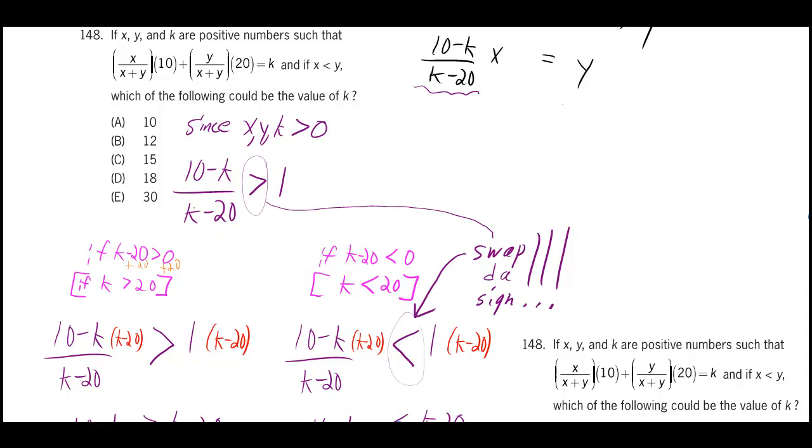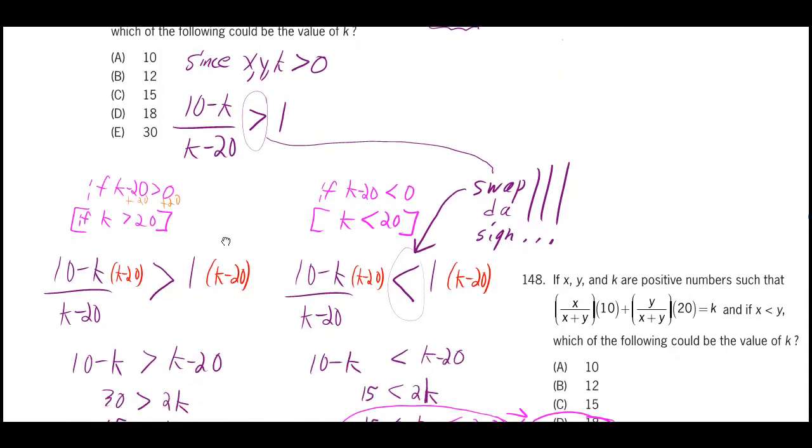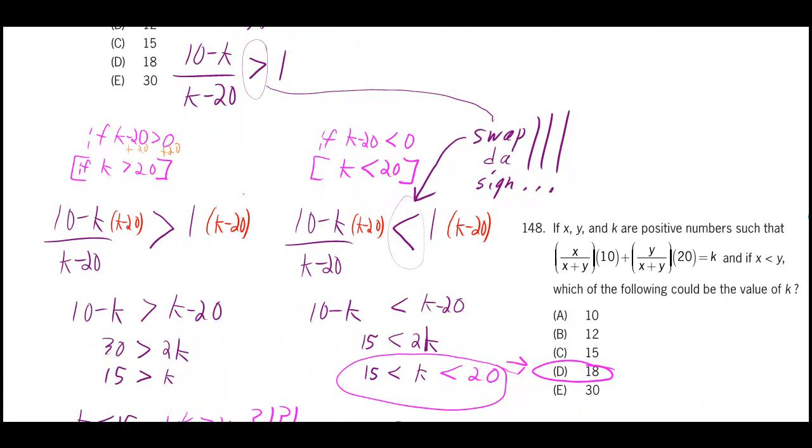And if it was 21, then you have 21 minus 20, which is 1, a positive number, right? So, in fact, it's going to be negative when k is less than 20. Well, if it was greater than 20, that means k minus 20 would be positive. And if we multiply both sides by k minus 20, then what happens is we don't have to swap the sign at all. We just continue solving, and when you solve, you eventually get k has to be less than 15.